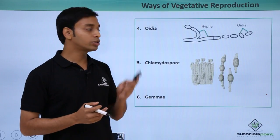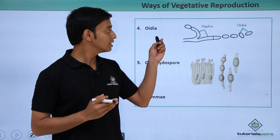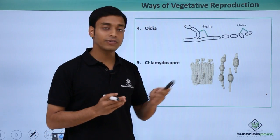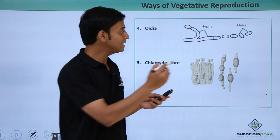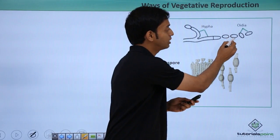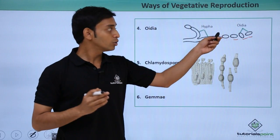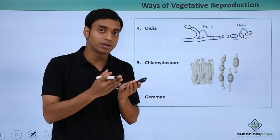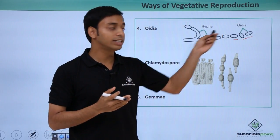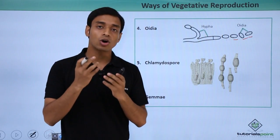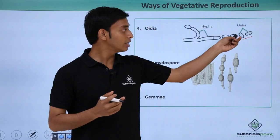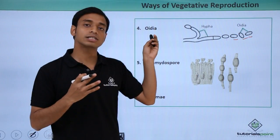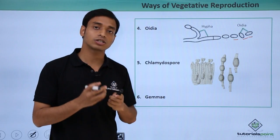The fourth type involves the formation of oidia. The hyphae break into smaller yeast-like cells, as you can see here. These are known as oidia. When conditions are favorable, each of these oidia can give rise to a new organism. This vegetative reproduction is due to the formation of structures called oidia.